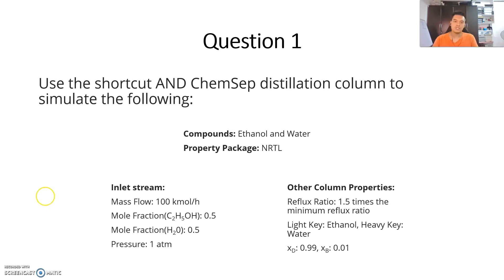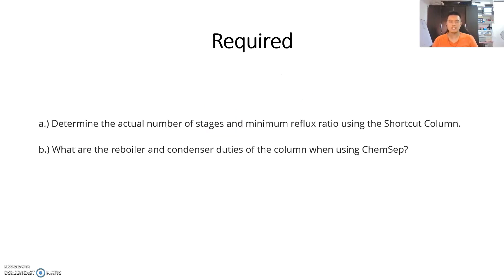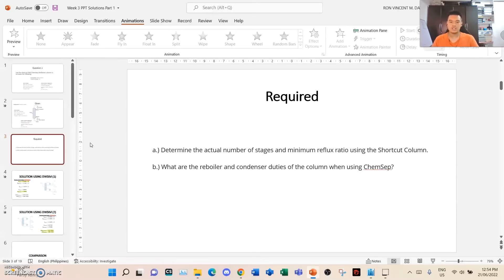This is the given diagram corresponding to the data. What is required: A, determine the actual number of stages and minimum reflux ratio using the shortcut column; and B, what are the reboiler and condenser duties of the column when using ChemSep.